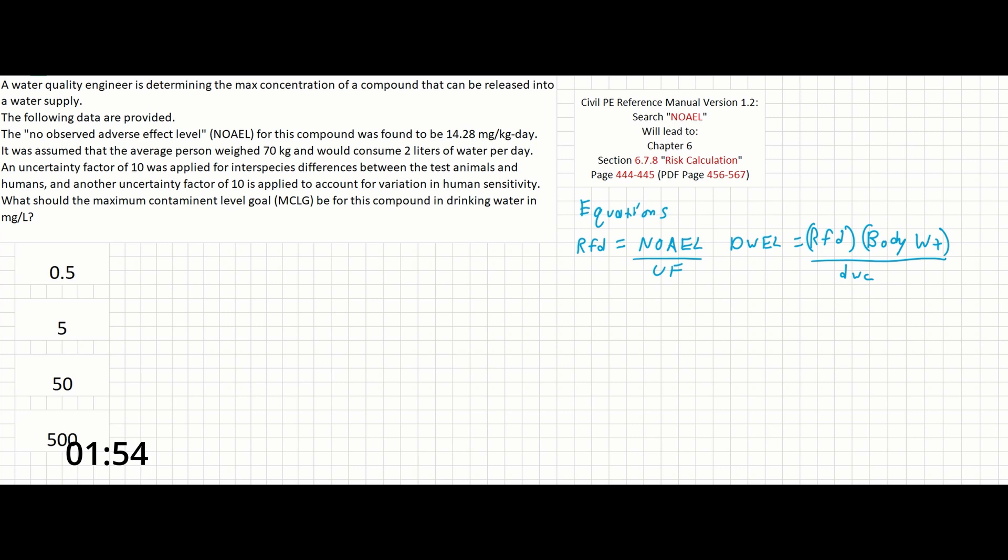Next, let's write out our knowns and what we are looking for. So the problem gives us the NOEL already, and that is going to be 14.28 mg per kg day.